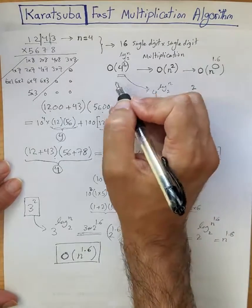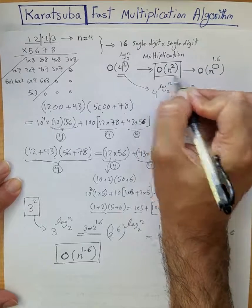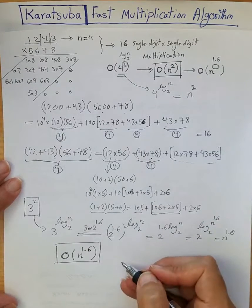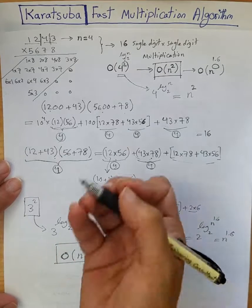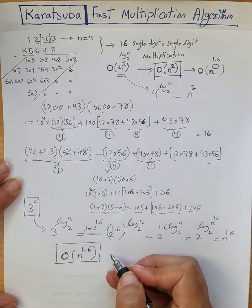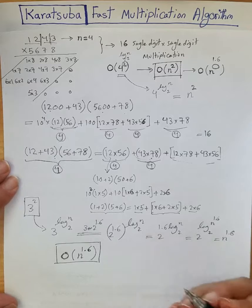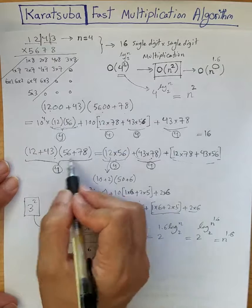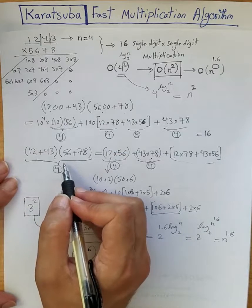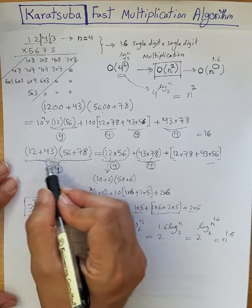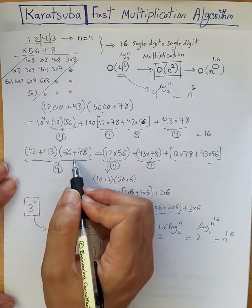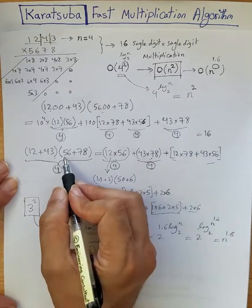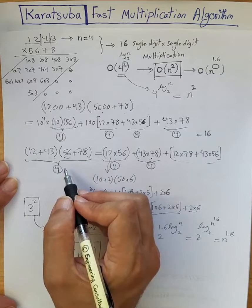The computation time reduces substantially if we use Karatsuba's algorithm for fast multiplication instead of the grade school traditional method. Going back to one last point: why can we assume that the sum of two 2-digit numbers is effectively still a 2-digit number, even when the sum might actually be three digits?